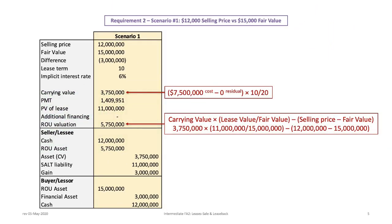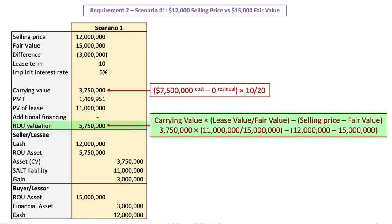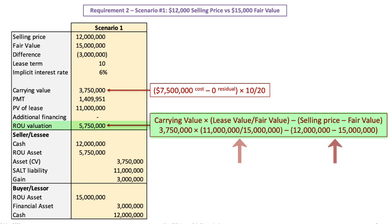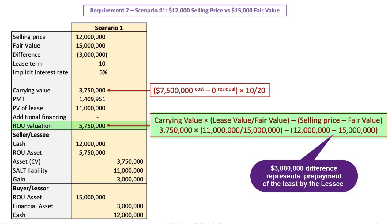Now we must calculate the right-of-use (ROU) asset valuation by taking the carrying value multiplied by the ratio of the lease value over the fair value, less the difference between the selling price and the fair value. Take $3,750,000 multiplied by $11,000,000 divided by $15,000,000, then subtract the $12,000,000 selling price from the $15,000,000 fair value — that difference is negative $3,000,000. The result is an ROU valuation of $5,750,000, which includes the $3,000,000 difference and is essentially a prepayment of the lease payments.